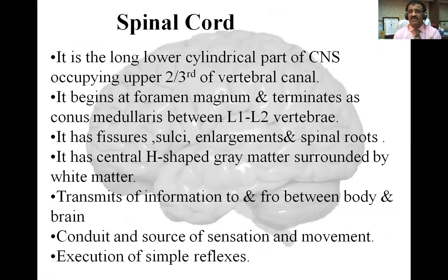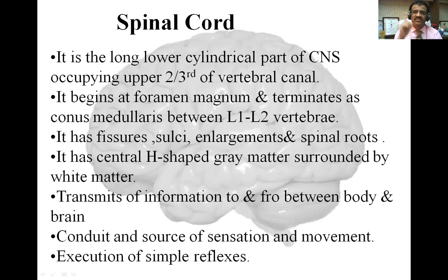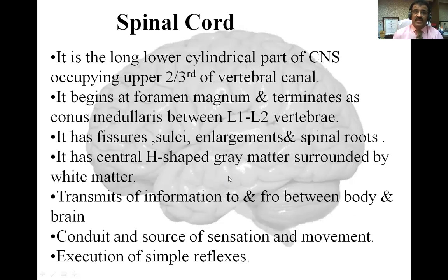The spinal cord is a long, cylindrical part of the CNS. The CNS consists of the brain — the spherical part — and the spinal cord — the cylindrical part. The spinal cord occupies the upper two-thirds of the vertebral canal. It begins at the foramen magnum in the skull, which is part of the occipital bone, and terminates as the conus medullaris between the L1 and L2 vertebrae. The lower one-third of the vertebral canal consists of cauda equina and spinal nerves.